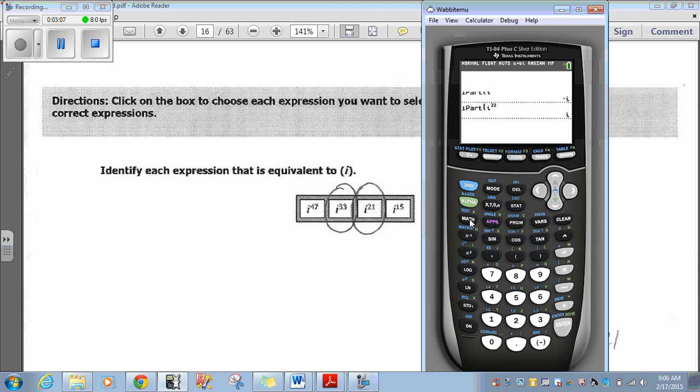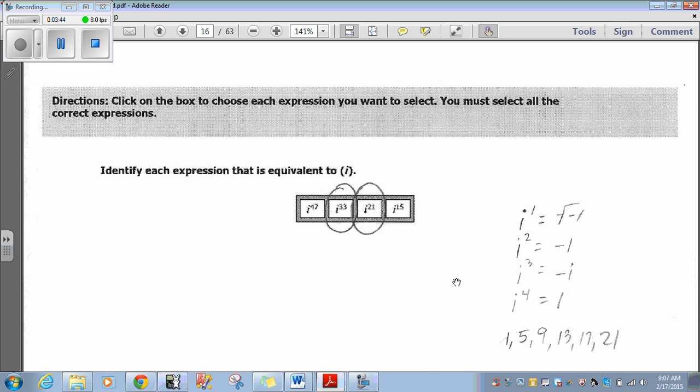And let's try i to the 33rd. That indeed does equal i. So, that one works. Then, math, num, IPART. Second period for i. Carrot, i to the 21st. That indeed equals i. So, those two work. And then, lastly, math, num, IPART. Second period. So that's i to the 15th. That's negative i. So, that one doesn't work. So, the only two are i to the 33rd and i to the 21st. Hopefully, you got that one.